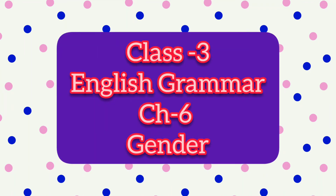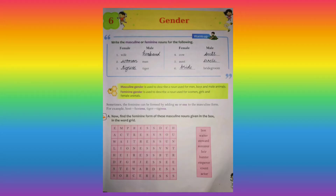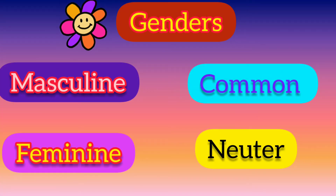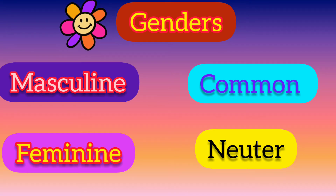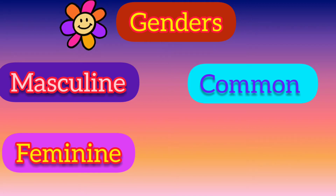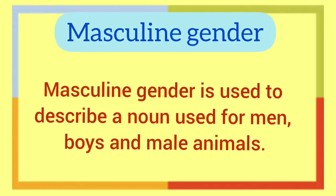Good morning children. Today we are going to discuss chapter 6, gender in English grammar. There are four types of genders in English language: they are masculine, feminine, common and neuter gender. In this chapter we are going to discuss the first three genders, that is masculine, feminine and common genders.